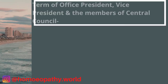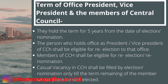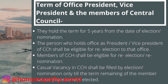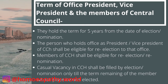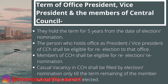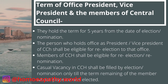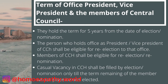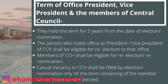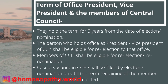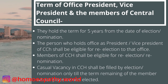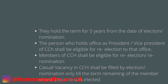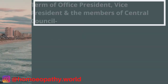Regarding the term of office for the president, vice president, and members of the central council: they hold a term of 5 years from the date of election or nomination. A person who holds office as president or vice president of the CCH shall be eligible for re-election and re-nomination. A casual vacancy in the CCH shall be filled by election or nomination only for the remainder of the term of the member at whose place the new member was elected or nominated.